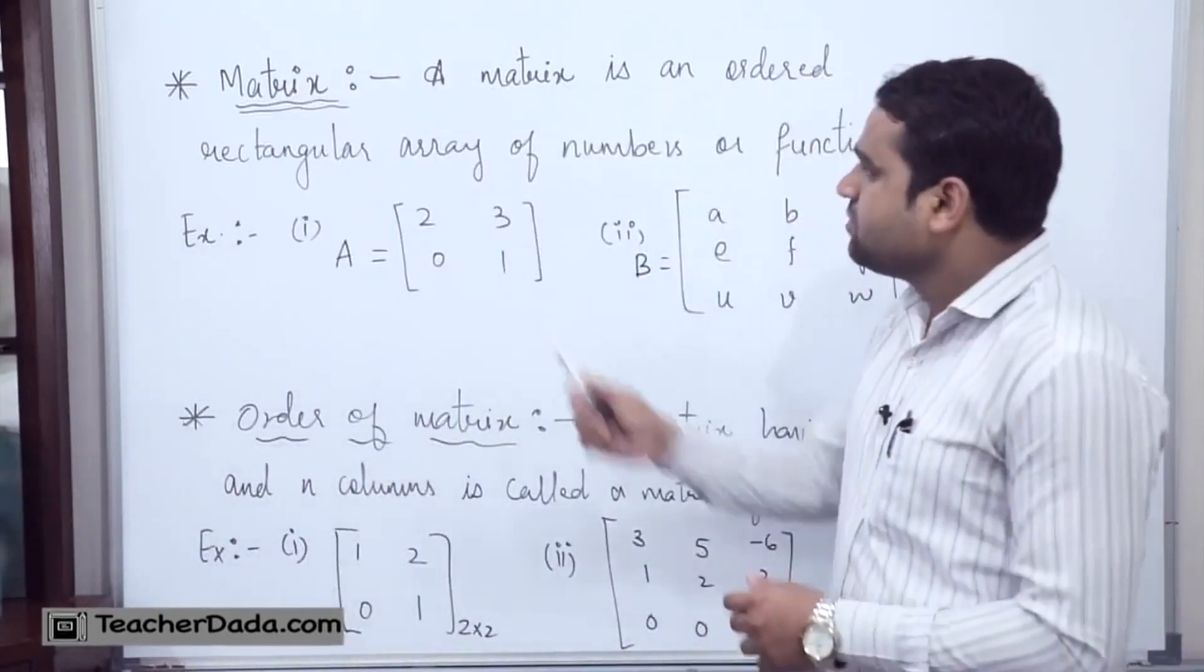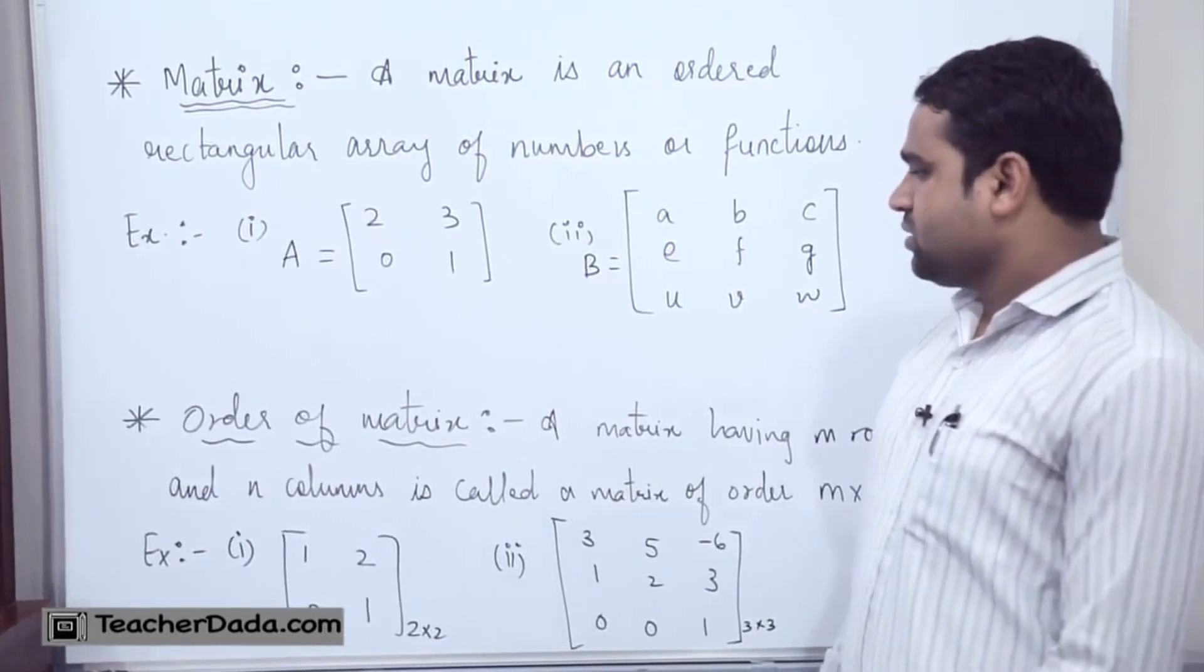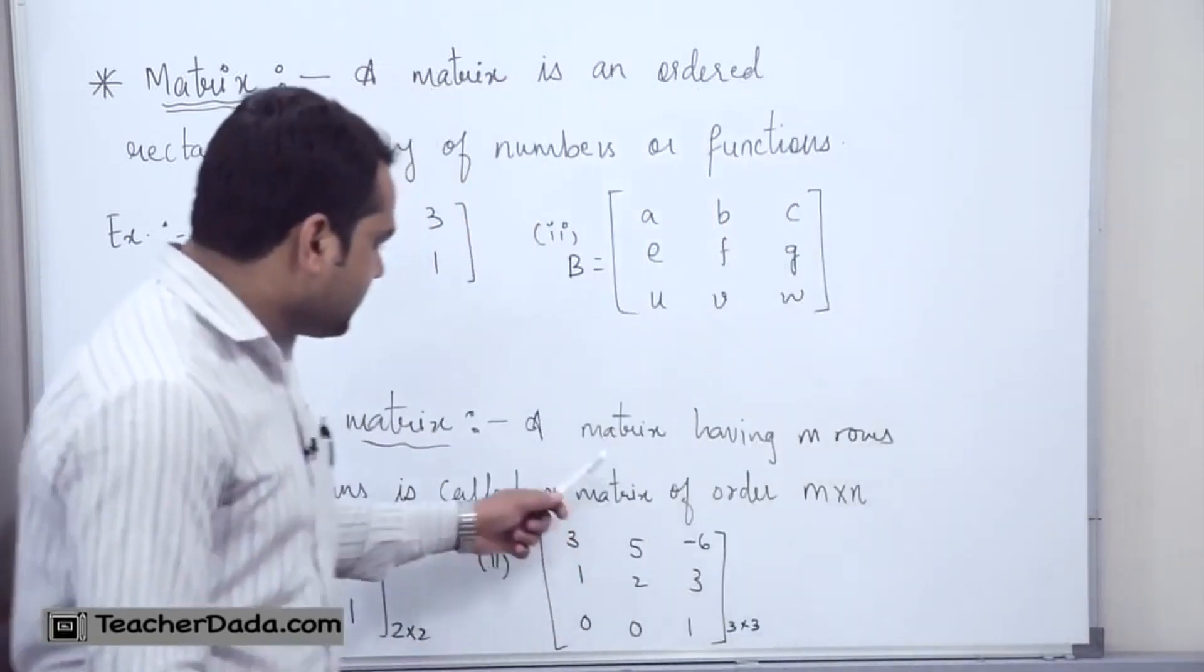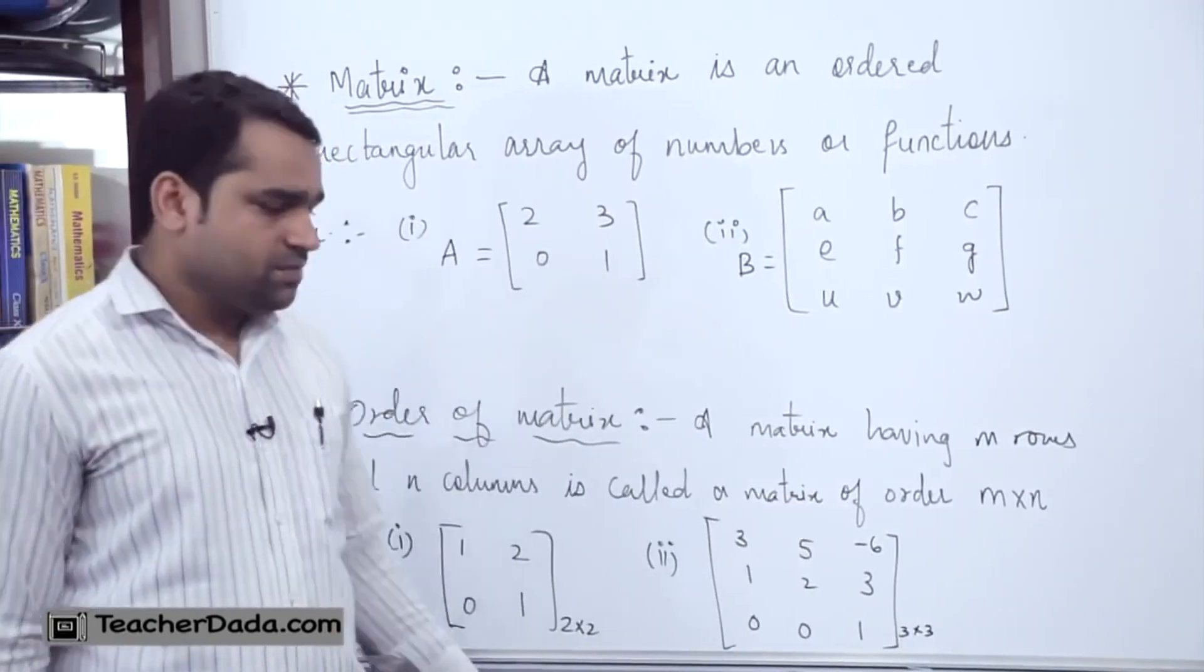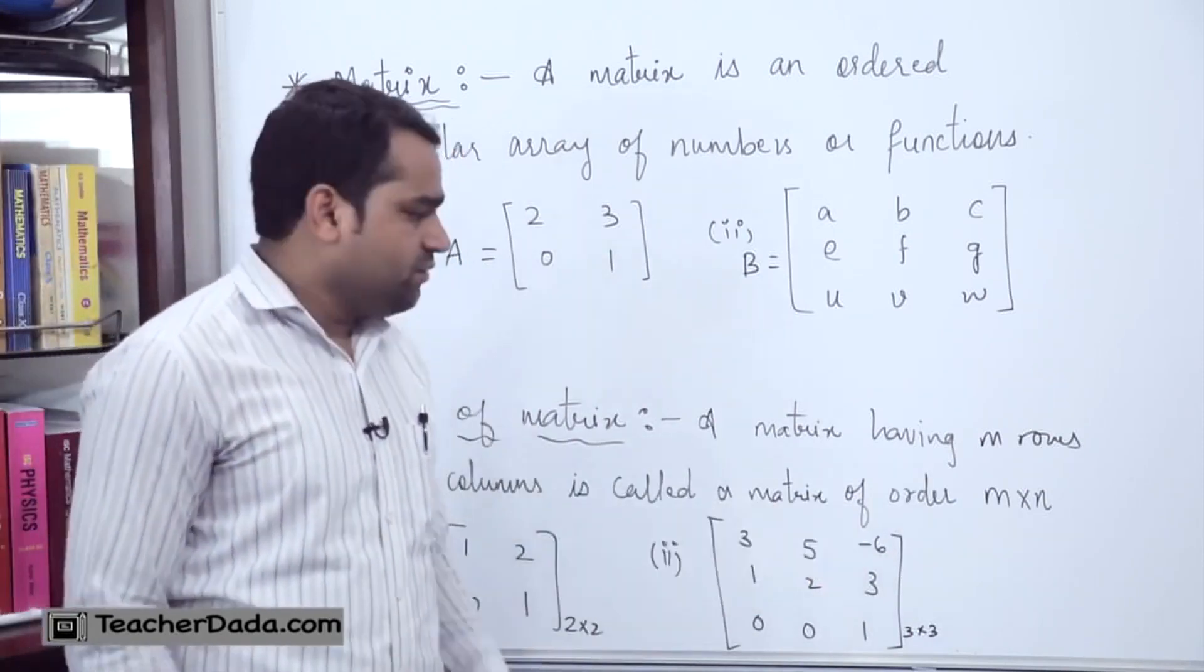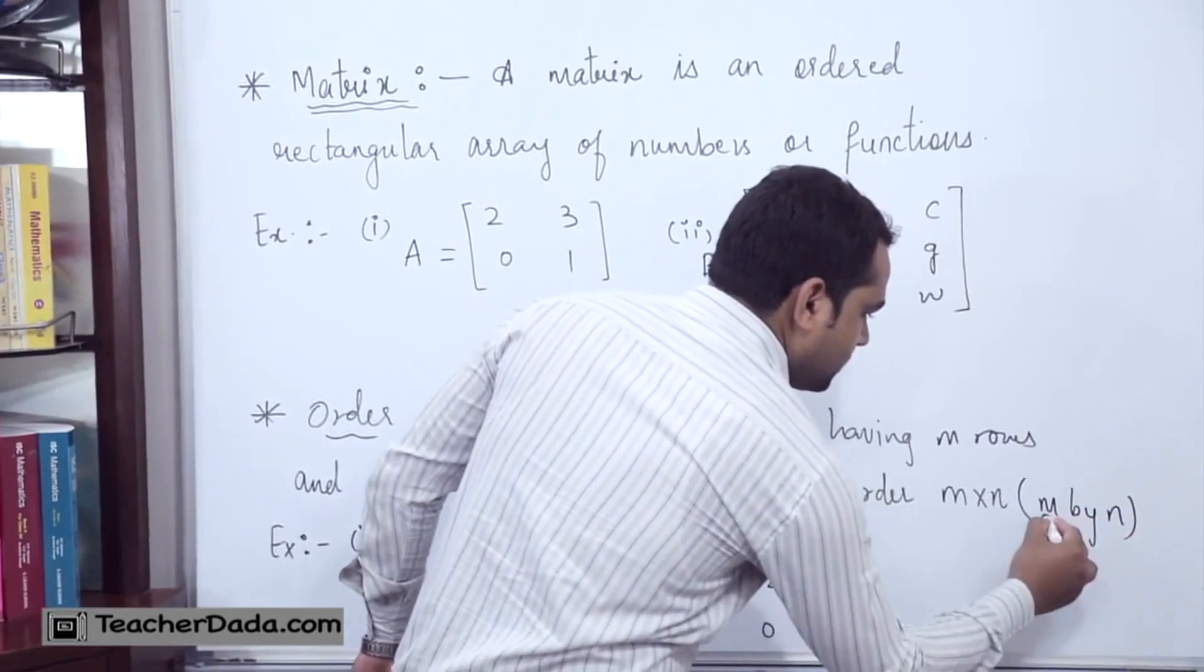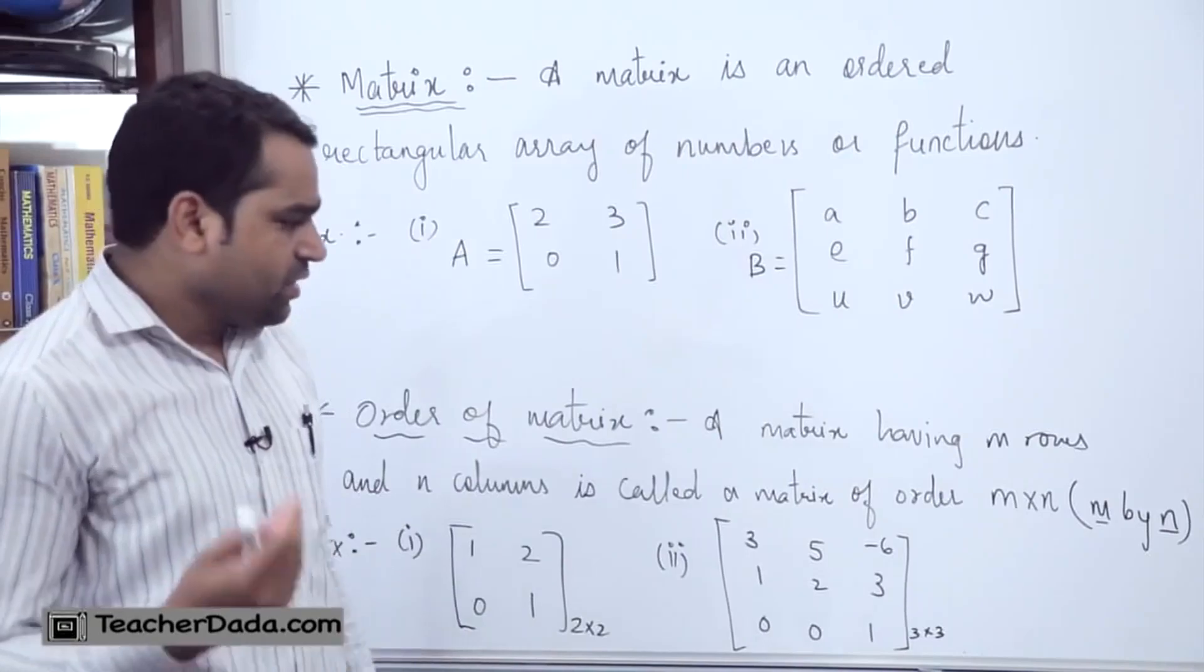This is what about a matrix. Now, we will have one or two questions based on finding the order of a given matrix or matrices. We will see how we can find the order of a matrix, very simple. You can see the definition here: a matrix having M rows and N columns is called a matrix of order M by N. We read it as M by N. If you want, you can write here it is nothing but M by N. This is the number of rows and this is the number of columns, and this gives us the order of the matrix.